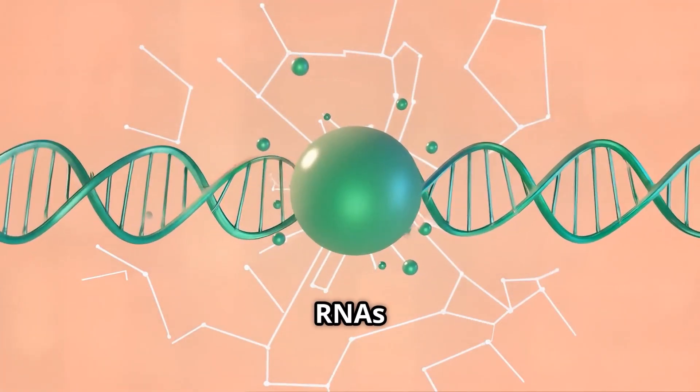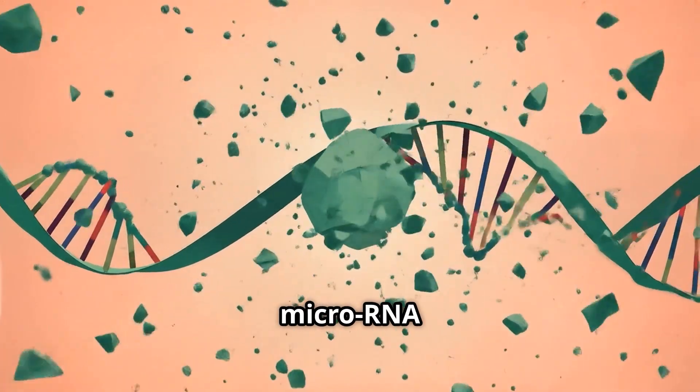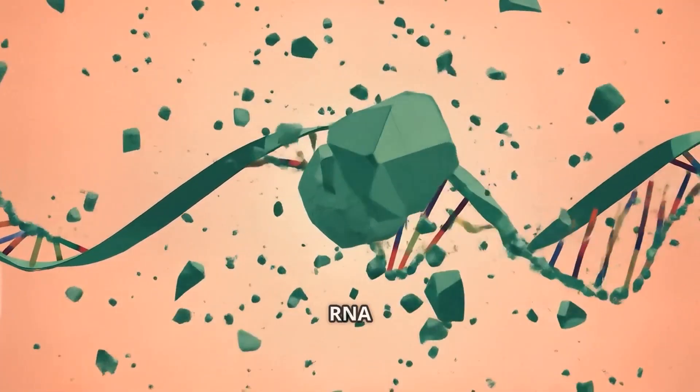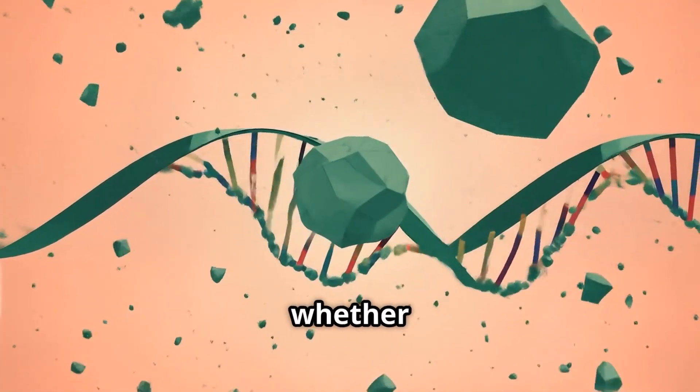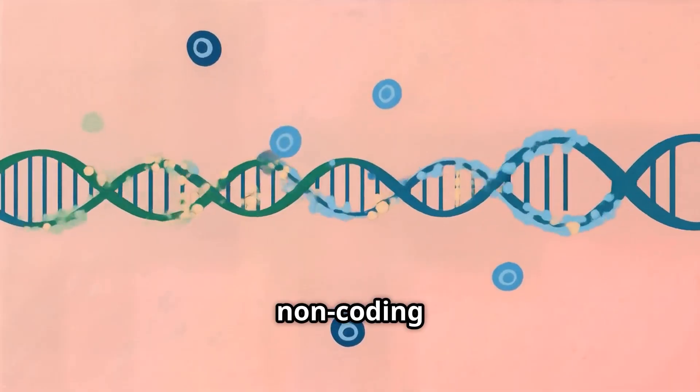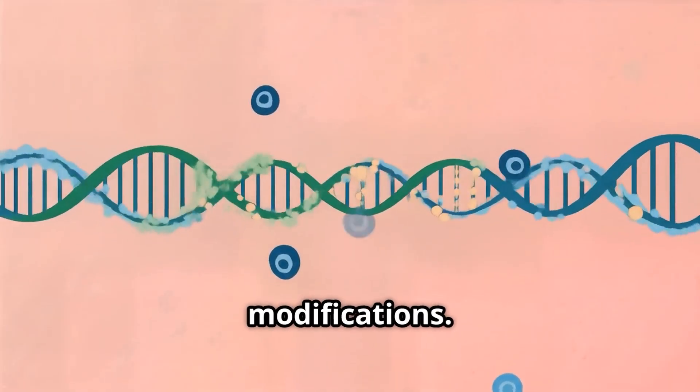Third, non-coding RNAs: these can interfere with messenger RNA (mRNA) and affect whether genes are translated into proteins. Some non-coding RNAs help guide other epigenetic modifications.